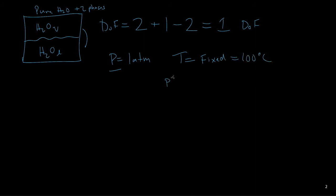So the vapor pressure of water at 100 degrees Celsius is equal to 1 atmosphere pressure, and that defines when the system is going to boil.